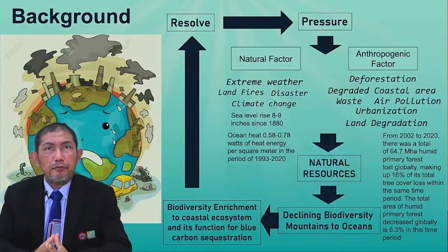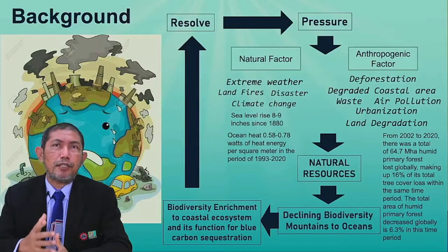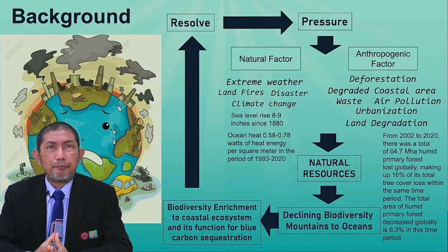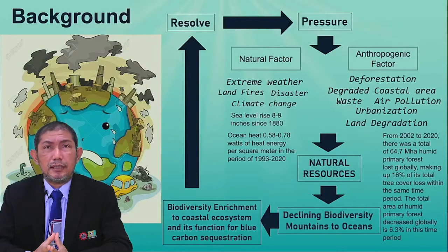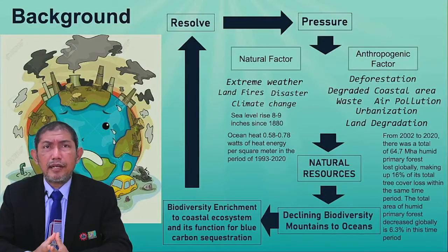The two main factors affecting natural resources come from natural and anthropogenic factors, which massively exert direct pressure, having significant impact on declining biodiversity from mountain to the ocean. Extreme weather, land fires, natural disasters, and climate change are dominant natural factors that have a direct impact.